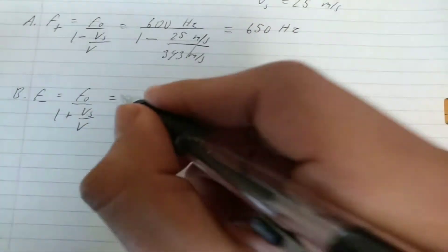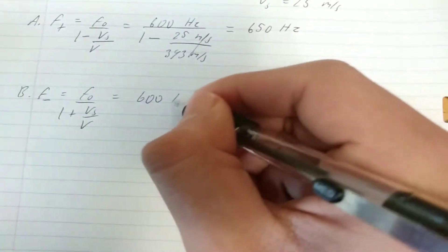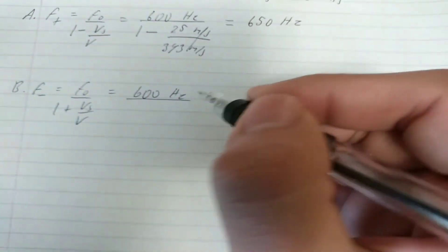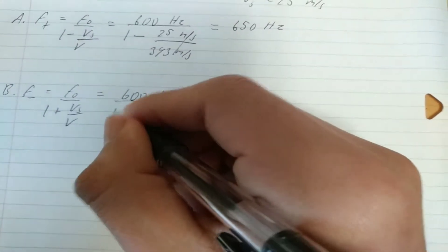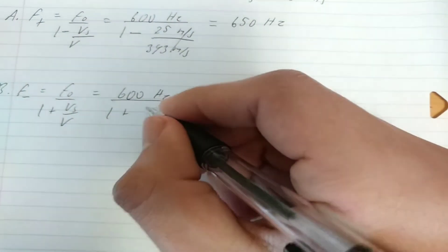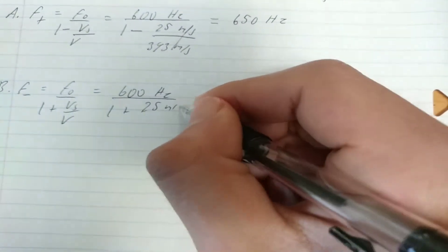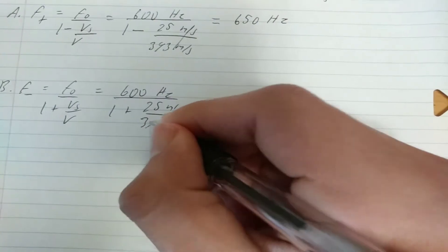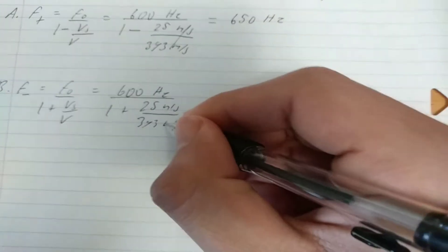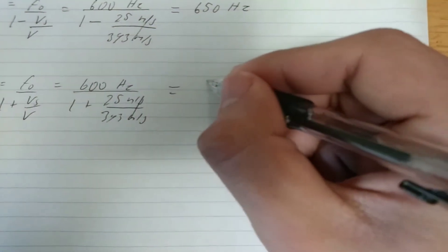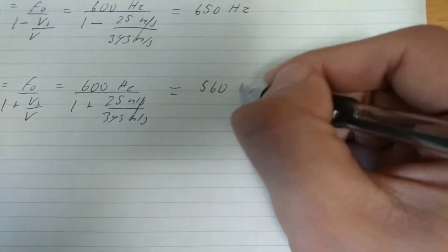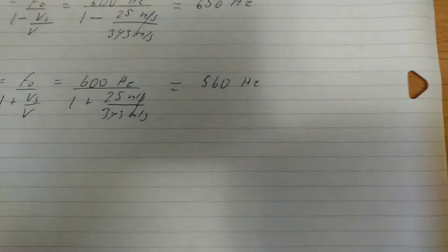Now again, we just plug our known values in, which is 600 hertz on the top for initial frequency, over 1 plus velocity of the source, which is 25 meters per second, over 343 meters per second. Again, our units cancel on the bottom, and we are left with 560 hertz after doing the math.